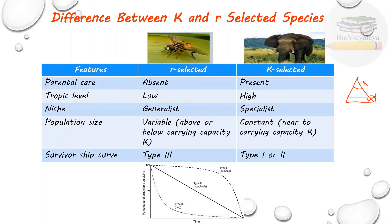Niche: R selected species are generalists, meaning they can live in a wide variety of environmental conditions and use a variety of different resources. K selected species are specialists, meaning they live in a narrow range of environmental conditions and use a limited diet. Population size in R selected species is variable — above or below carrying capacity K — while in K selected species, population size is constant, remaining near carrying capacity K.